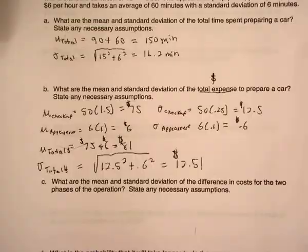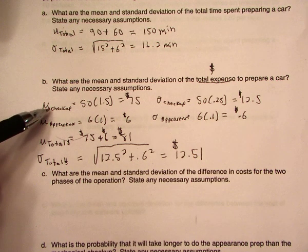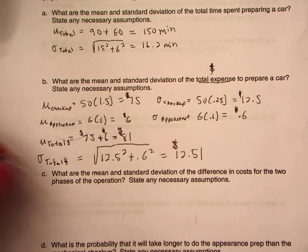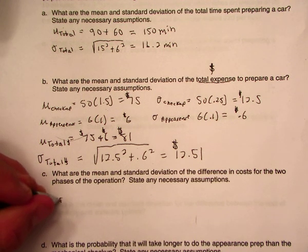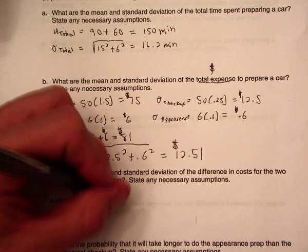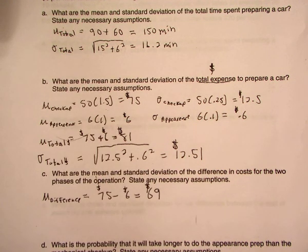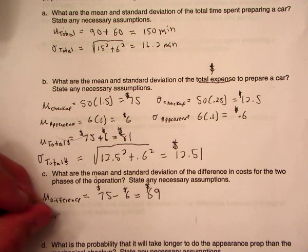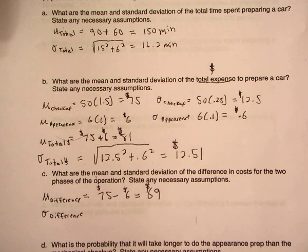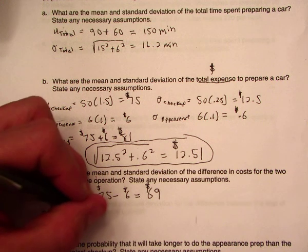The next question asks for the mean and standard deviation of the difference in costs for the two phases. The mean difference is $75 minus $6, so on average the checkup will cost $69 more than the appearance prep. For the standard deviation of the difference, we again add the variances — it's the same calculation as before, so it's also $12.51.